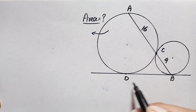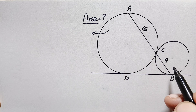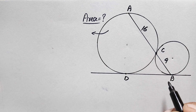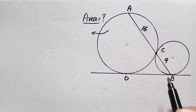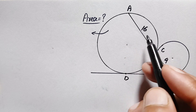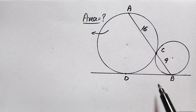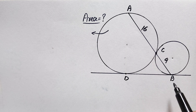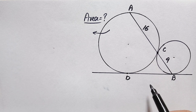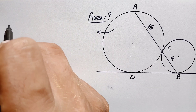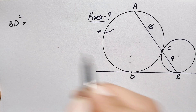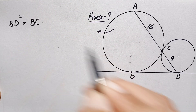First, we will try to find out the length of BD, which is a tangent to both circles. To find the value of BD, we will use the result: if BD is a tangent to a circle and AB is a line segment such that AC is a chord on this circle, then the square of BD equals the product of BC times BA. So we can write BD² = BC × BA.